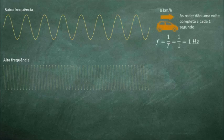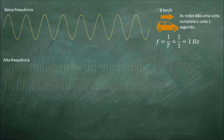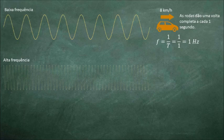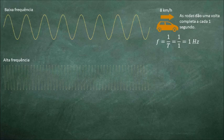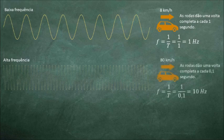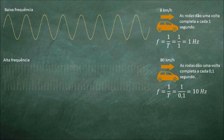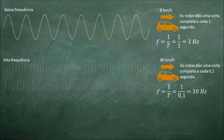Em exemplos práticos, imaginemos um carro que trafega 8 km por hora. Nessa velocidade, suas rodas farão uma volta completa a cada um segundo. A equação física que determina a frequência é representada conforme aqui descrito, ou seja, a frequência é o inverso do tempo. No caso desse exemplo, a frequência de giro das rodas desse carro será de 1 sobre 1, o que equivale a uma frequência de 1 hertz. Se o carro aumentar sua velocidade para 80 km por hora, as rodas farão uma volta completa a cada um décimo de segundo. Nesse caso, a frequência de giro das rodas será 1 sobre 0,1, o que equivale a uma frequência de 10 hertz, uma frequência maior que a anterior.